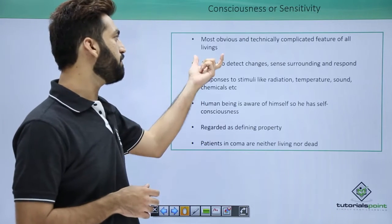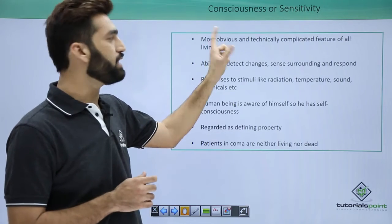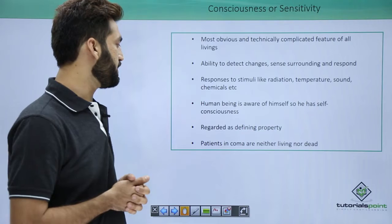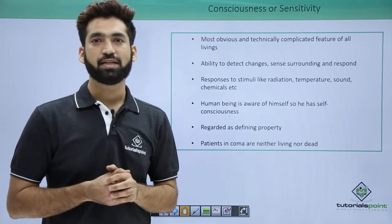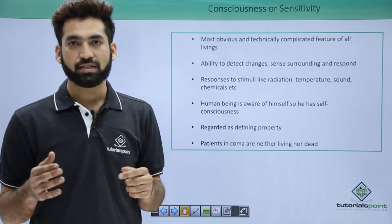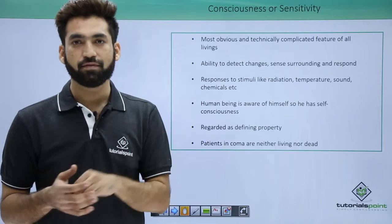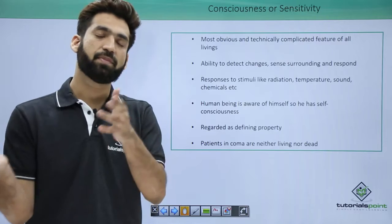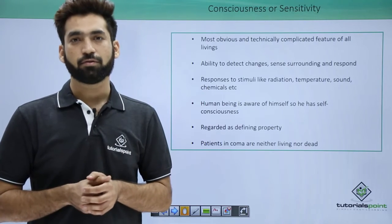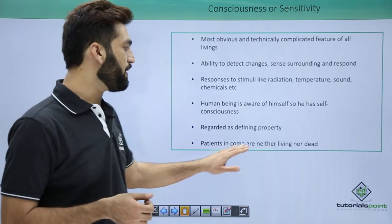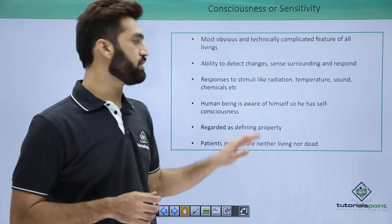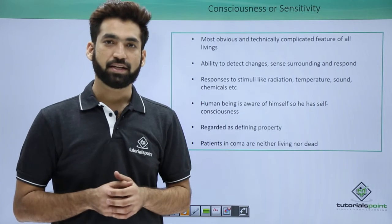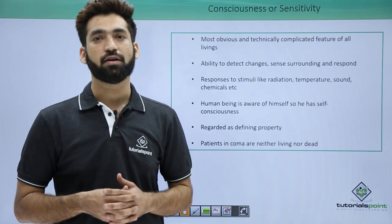Consciousness is one of the most obvious and technically complicated features. This was once asked in the NEET exam — which property is most obvious and technically complicated? The answer is consciousness. Consider a patient lying in a coma: when you try to give a stimulus and they don't respond, that doesn't mean they can't return to normal. That patient is neither living nor dead, yet consciousness remains a defining property. The next session will cover cellular organization.